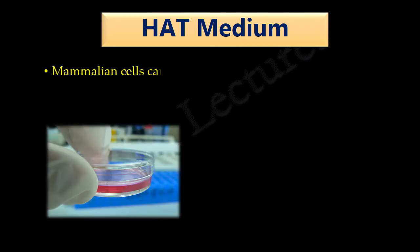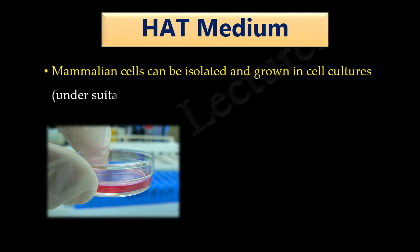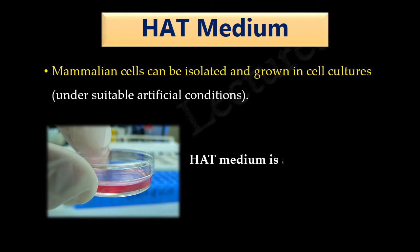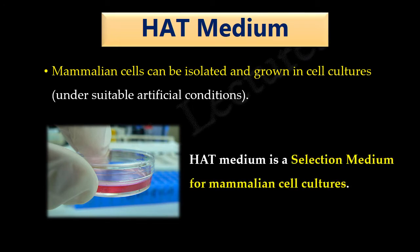Mammalian cells can be isolated from their body and grown in cell cultures, that is under suitable artificial conditions. HAT medium is a selection medium for mammalian cell culture. To understand this better, let's look at the following illustration.